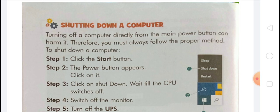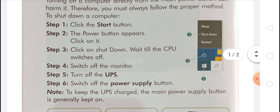In step 1, you have to click the start button. In step 2, the power button appears — click on it. In step 3, click on shut down. Wait until the CPU switches off. In step 4, switch off the monitor. In step 5, turn off the UPS. In step 6, switch off the power supply button.